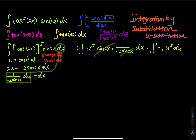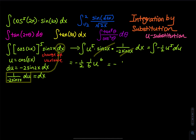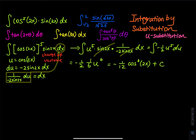After cancellation, we have negative one-half times the integral of u to the fifth du. Applying the power rule gives negative one-half times u to the sixth over six, which is negative one over twelve. Substituting back, u equals cosine of 2x, so the answer is negative one over twelve times cosine⁶(2x) plus C.